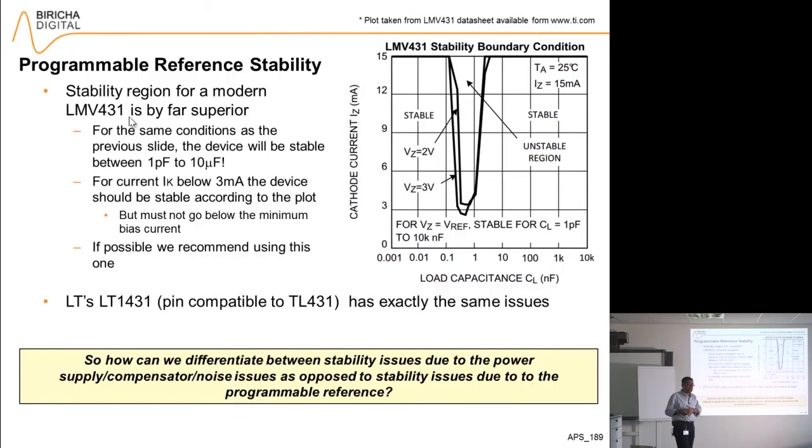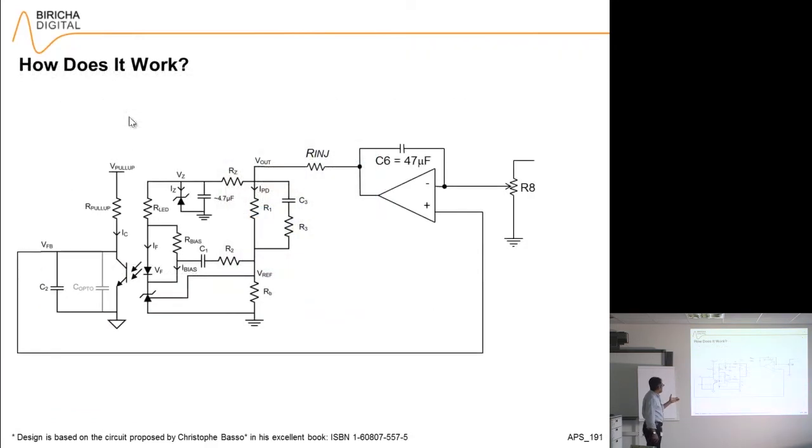The way to deal with it is to actually make a little test board and assess the stability of the compensator on its own before putting it into the power supply. Here is the circuit of the device, of the test fixture. You can make this yourself if you wish. It's basically an op-amp closing the loop across a type 2 or type 3 compensator. You are setting a reference voltage here and taking the feedback to the other pin of the op-amp.